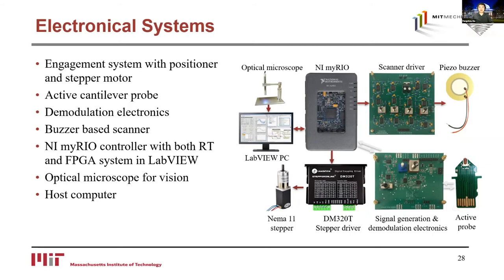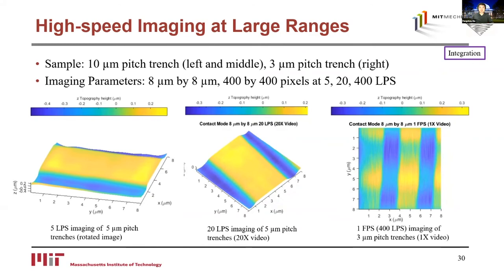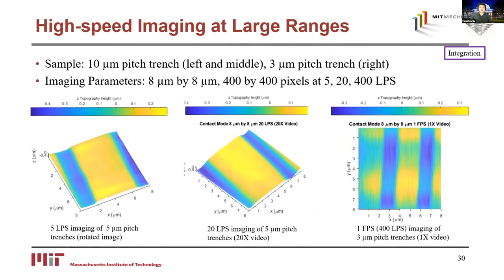The next example is the multi-layer stack scanner AFM, designed for high-speed imaging at a relatively larger range. A piezoresistive self-sensing probe with acoustic actuation is used with the multi-layer stack scanner. The color-coded CAD shows the probe and sample interface in blue, the full scanner assembly and coarse engagement systems in brown. We tested high-speed imaging at large ranges by imaging calibration gratings over 8×8 microns at 400×400 pixel resolution in contact mode at increasing scan speeds. The samples have 10-micron trench periods on the left and middle, and 3-micron trench periods on the right.